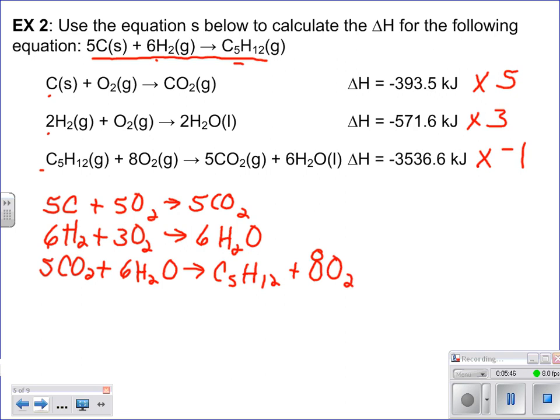Now in order for us to do this, we didn't just multiply the reactions. We also multiplied our delta H values. So our delta H values, when we do this math right here, become negative 1,967.5, and that's in kilojoules, negative 1,714.8 kilojoules, and positive 3536.6 kilojoules. So all I'm saying here is that we made sure that these values that we multiplied through our reactions, we also did that with our delta H values. So now all you have to do is add it all up and make sure it works out.